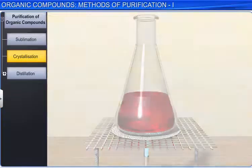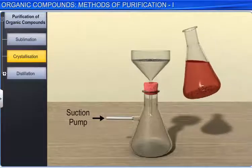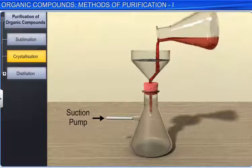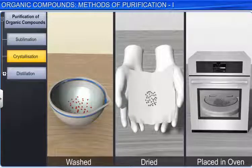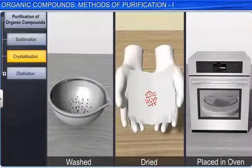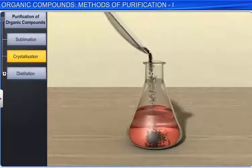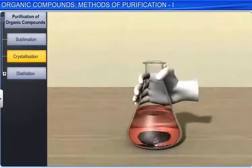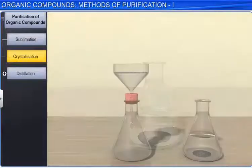This saturated solution is then cooled to obtain the compound in its pure crystal form. The crystals are separated out from the filtrate by the filtration technique. The crystals are washed once or twice with small quantities of the pure solvent and dried by pressing between the folds of filter paper and then placed in an air oven. Sometimes impurities impart color to the solution. To remove such impurities, the filtrate is passed through activated charcoal. The charcoal adsorbs the impurities. The solution is then filtered and recrystallized as described above.